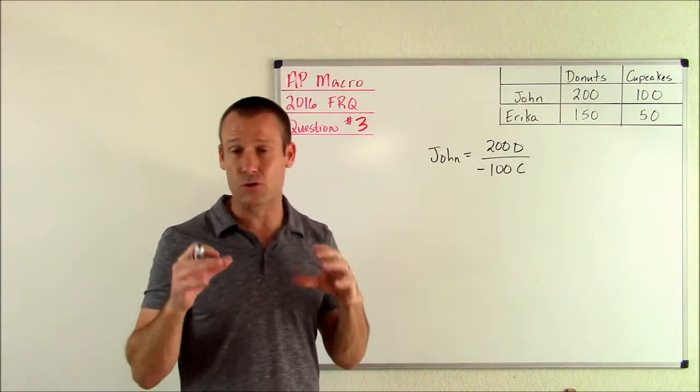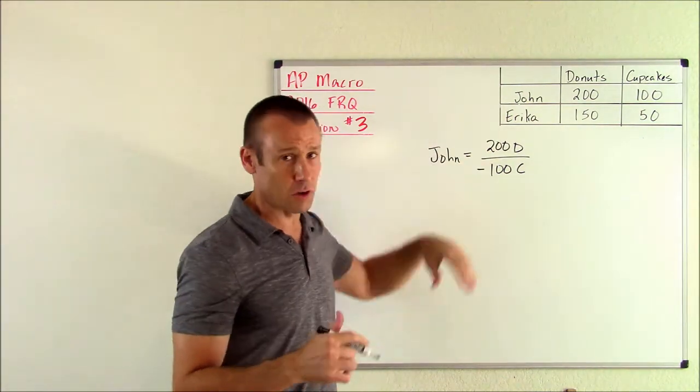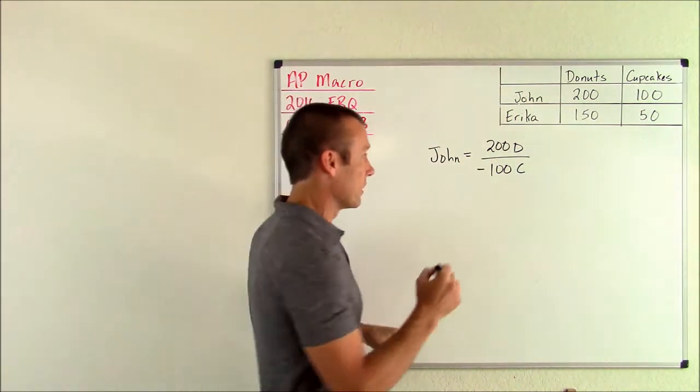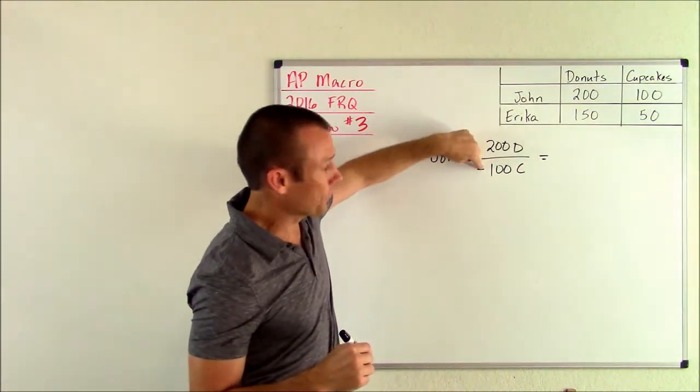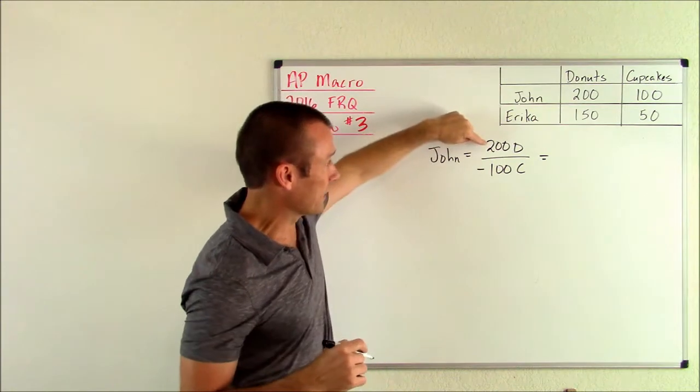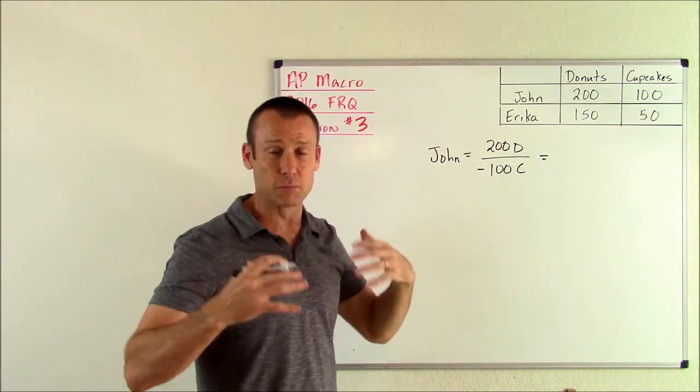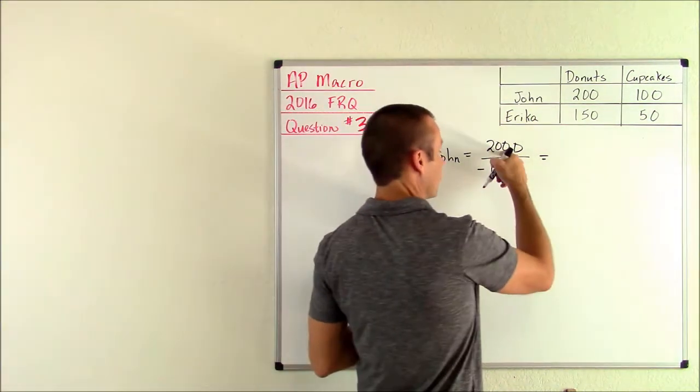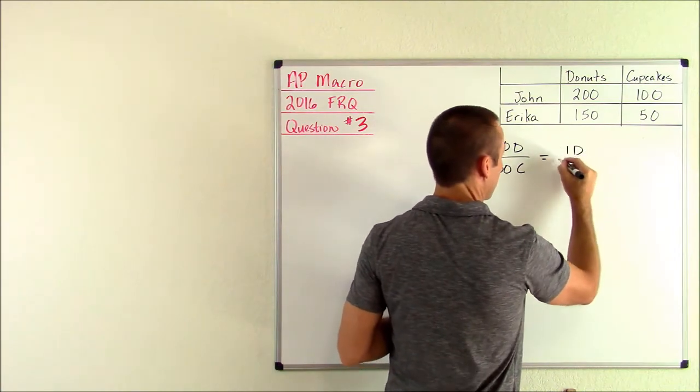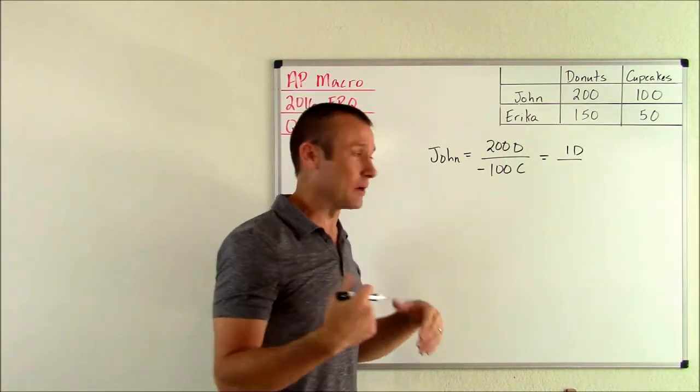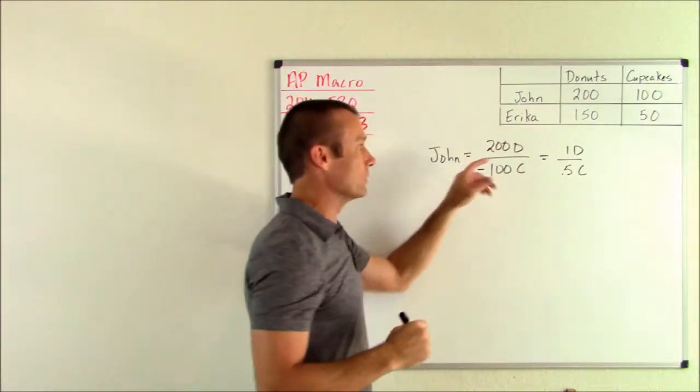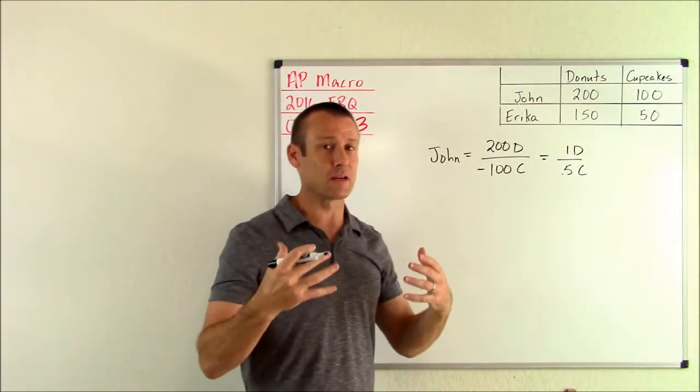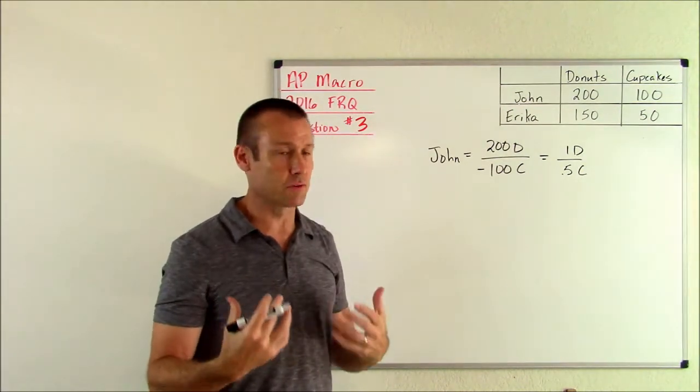I want to figure this out for donuts. What I want to get this in terms of is one donut. I'm going to divide both of these by 200. 200 divided by 200, I've got one donut. 100 divided by 200 is 0.5 cupcakes. So when John makes one donut, he gives up, it costs him 0.5 cupcakes.